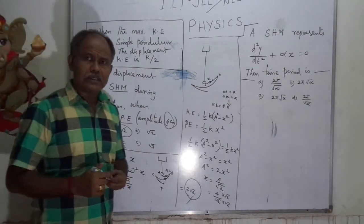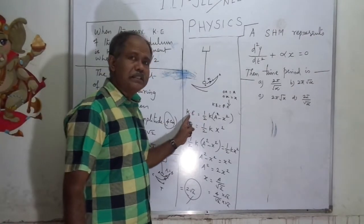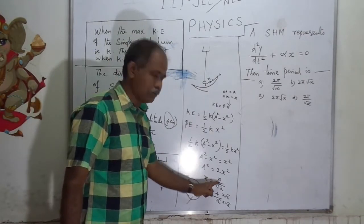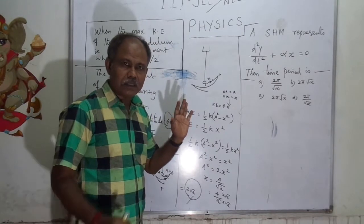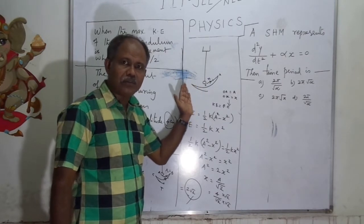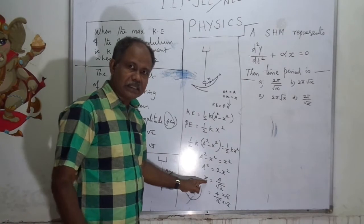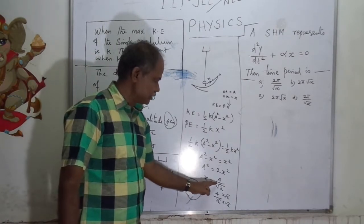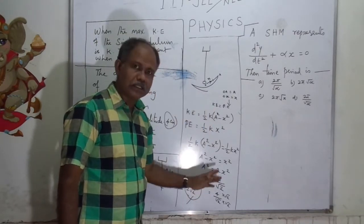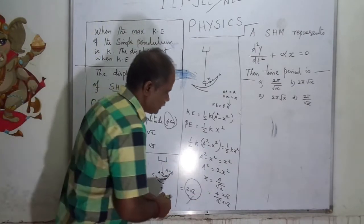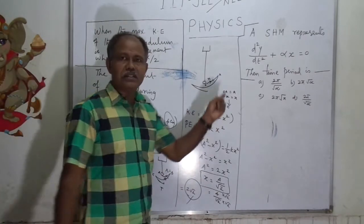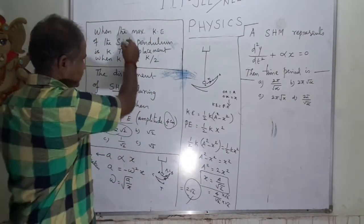Or simply remember: if potential energy and kinetic energy are equal, the displacement is A by root 2 — that is, x = A/√2. If half of the energy is potential and half is kinetic, the distance reached by the particle equals A/√2. Just remember this particular formula: distance = A/√2 when kinetic energy equals potential energy.